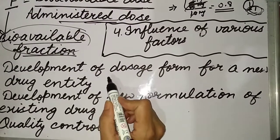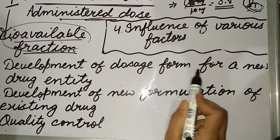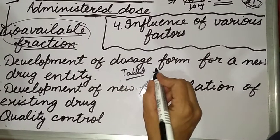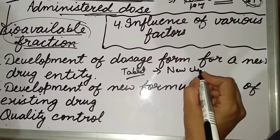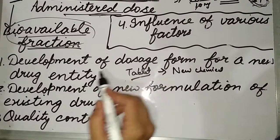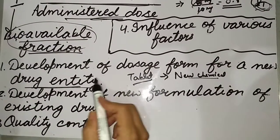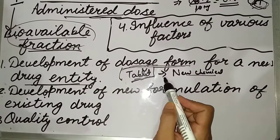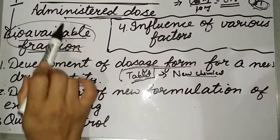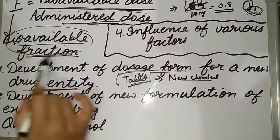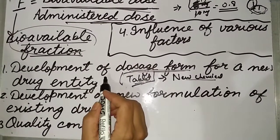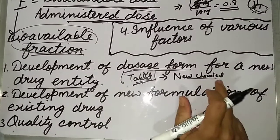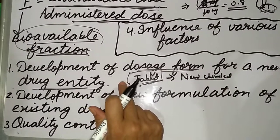The first important objective of bioavailability studies is the development of a dosage form for a new drug entity. Suppose there is a new chemical entity which has been synthesized and we have developed a tablet for it. How will we know whether this tablet will show therapeutic efficacy in the body or not? It will directly depend on the bioavailable fraction. Therefore, there is a need to determine the bioavailability of that new entity.